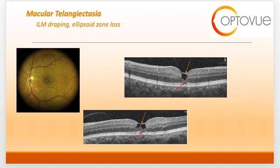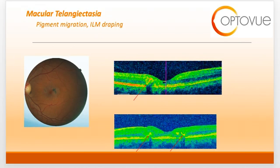The orange arrows on this slide are directed at the areas of ILM draping. You can also see loss of the ellipsoid zone as indicated by the red arrows on this slide. As the disease progresses, the outer retina becomes involved. This slide shows RPE hyperplasia that occurs as a result of continued damage to the outer retina and photoreceptor layer. Hyperreflective areas on OCT correlate to RPE hyperplasia or pigment migration. This can be seen by the red arrows on this scan.